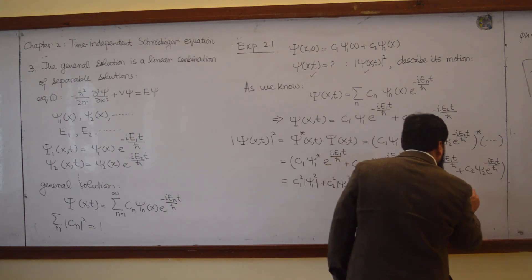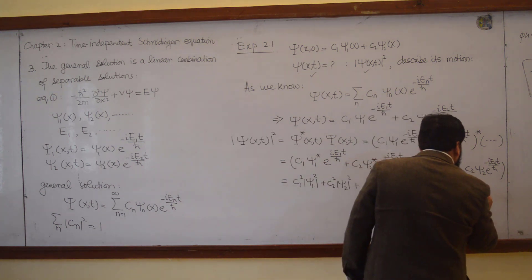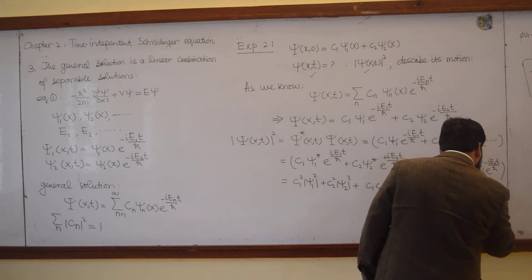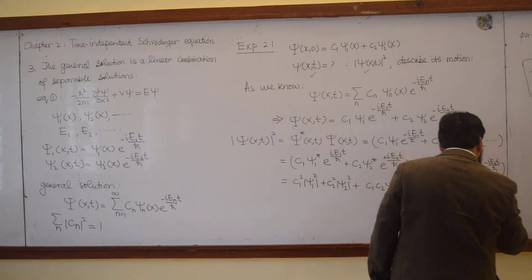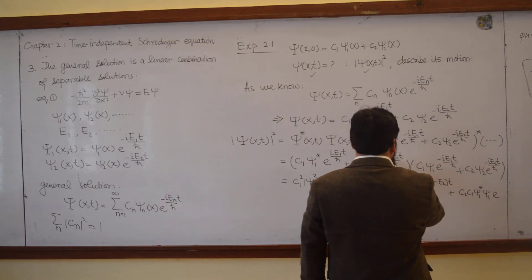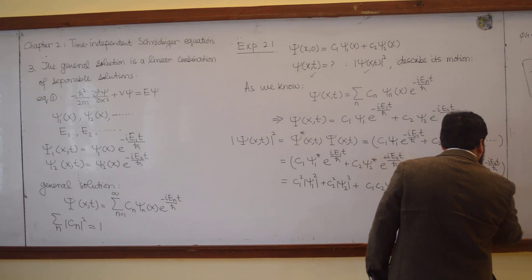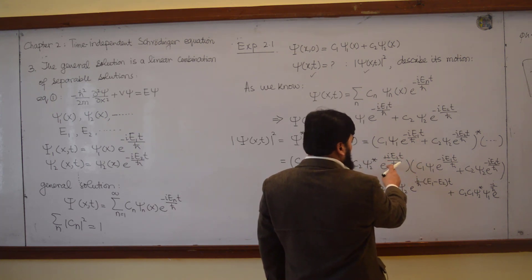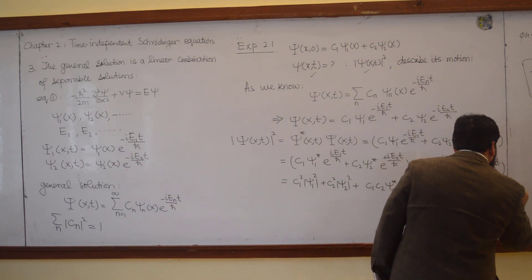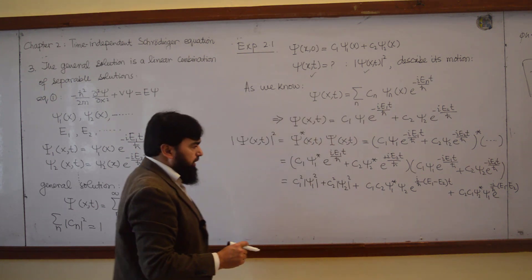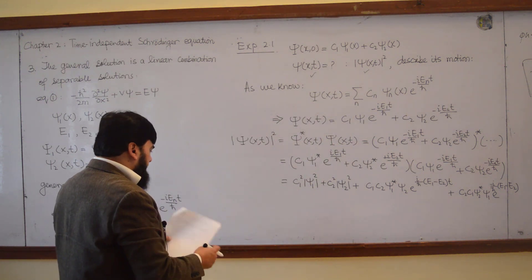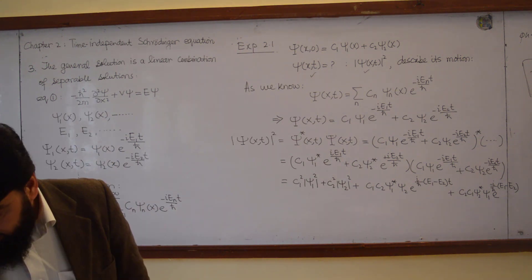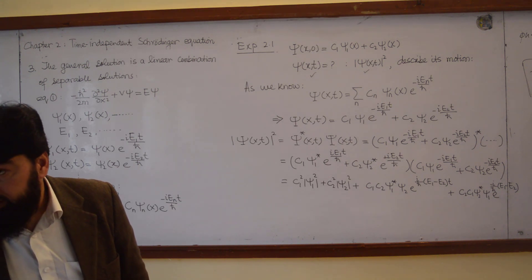The other cross term gives C2 C1 ψ2* ψ1 e^(−i(E1−E2)t/ℏ). Since Cn and ψn are real, the conjugates equal themselves, so ψ1* = ψ1 and ψ2* = ψ2. This simplifies the cross terms using the real-valued assumption.